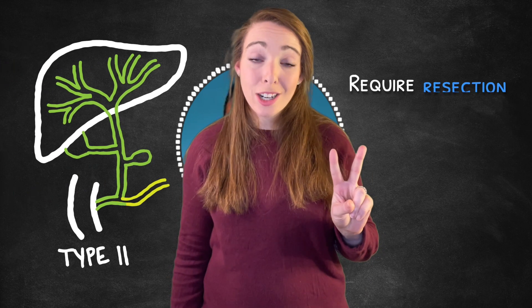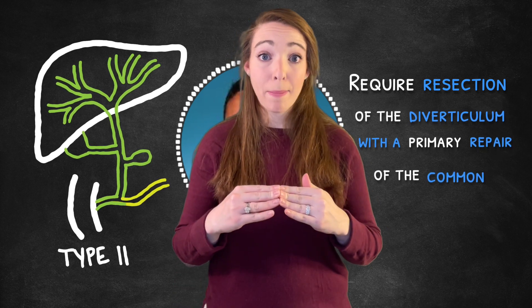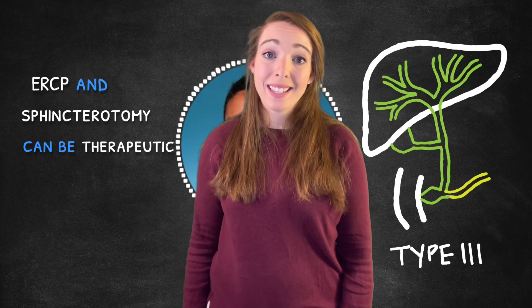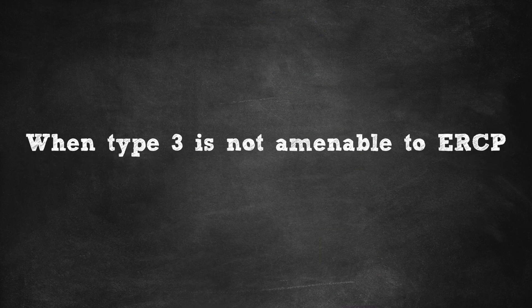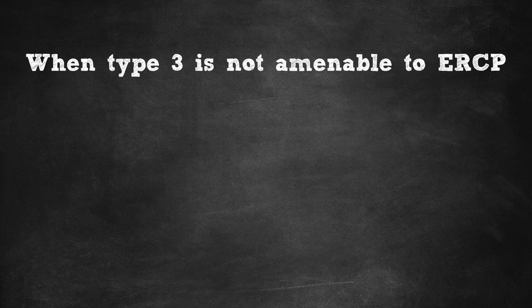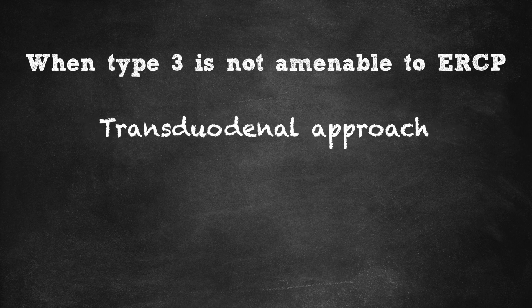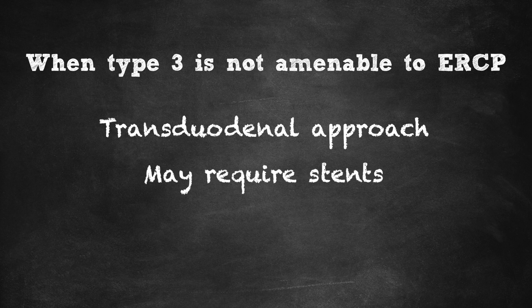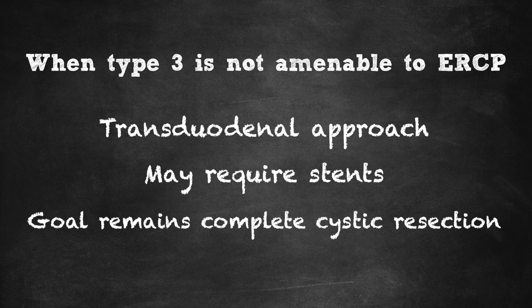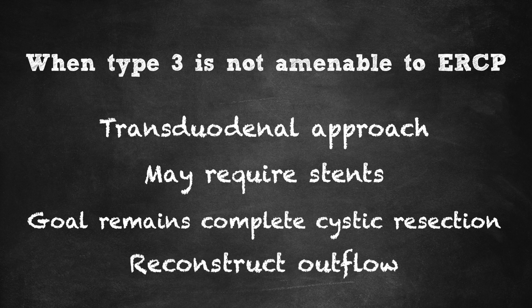Type 2 choledochal cysts require a resection of the diverticulum and a primary repair of the common bile duct. For type 3, ERCP and sphincterotomy can be therapeutic in some cases, but sometimes it's just not that easy. If the lesion is large and obstructing the common duct, you oftentimes have to go transduodenal and carefully identify the cyst — sometimes even with preoperative stents inserted from an ERCP standpoint — in order to resect the cyst, separate it from the duodenum, and subsequently reconstruct the outflow.